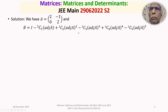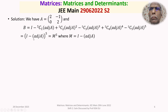We recognize this as the binomial expansion, so B equals (I minus adjoint of A) to the power of 5. Let us call this M to the power of 5, where M equals I minus adjoint of A.